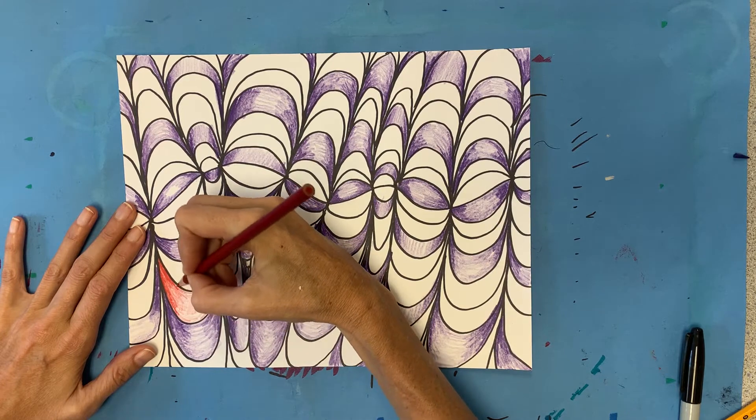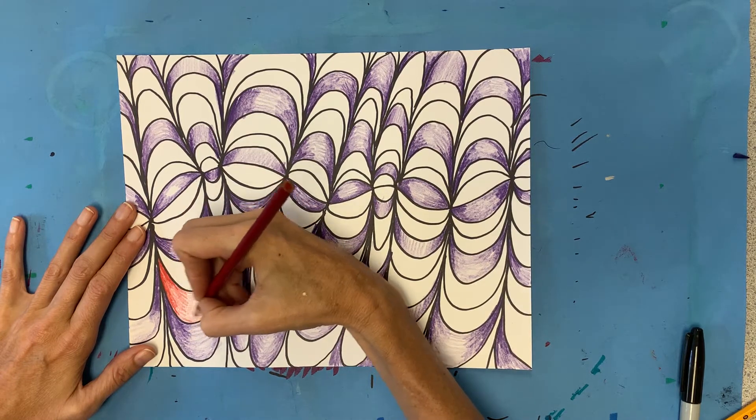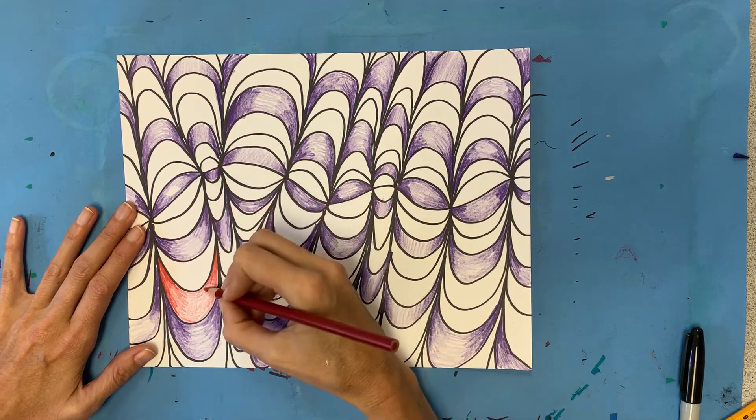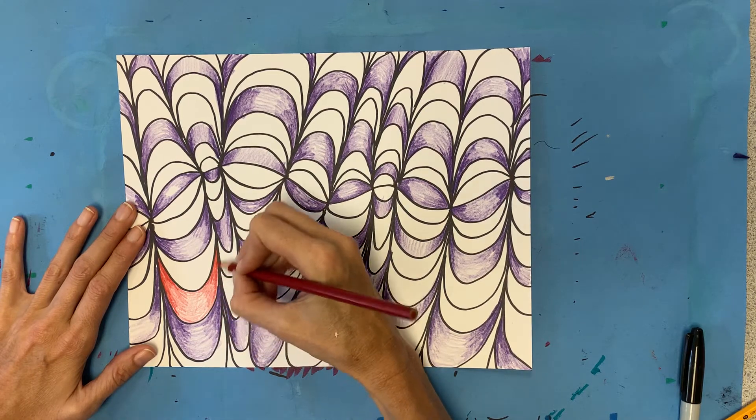So we're going from dark red to medium red to very very light in the middle back to medium again and then back to dark.